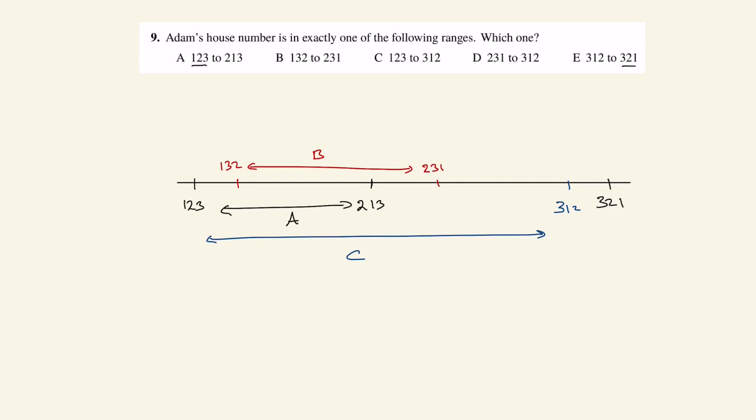D would be 231 to 312. So from here to 312, this distance over here.